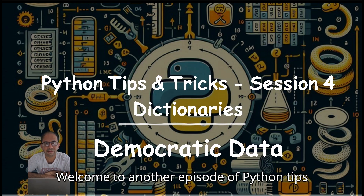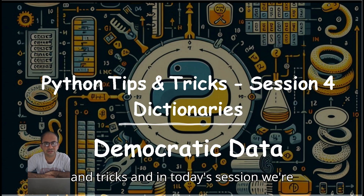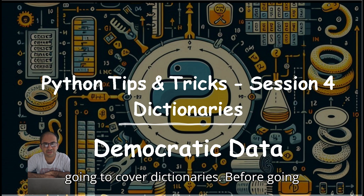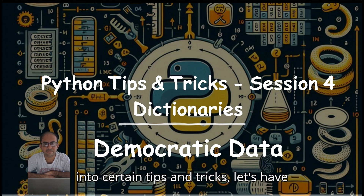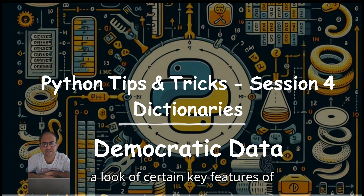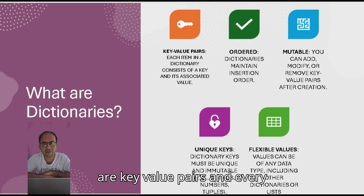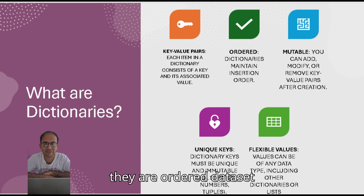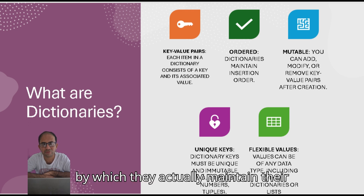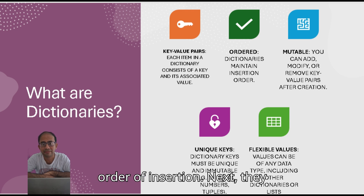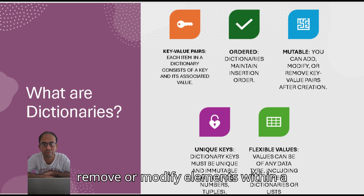Welcome to another episode of Python Tips and Tricks. In today's session we are going to cover dictionaries. Before going into certain tips and tricks, let's have a look at certain key features of dictionaries. First of all, dictionaries are key-value pairs and every value is ordered with a key. Next, they are ordered data sets, meaning they actually maintain their order of insertion. Next, they are mutable — you can add, remove, or modify elements within a dictionary.